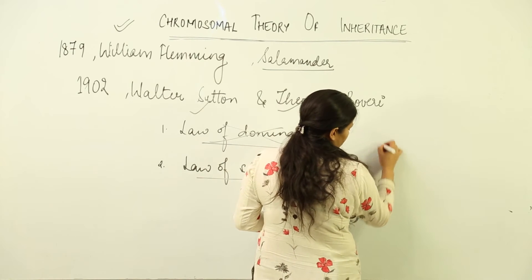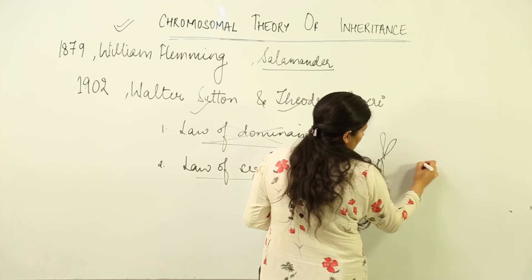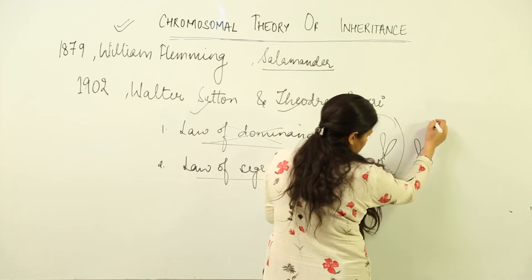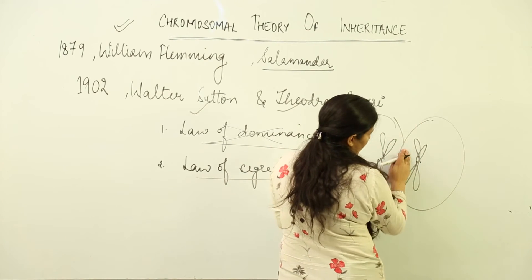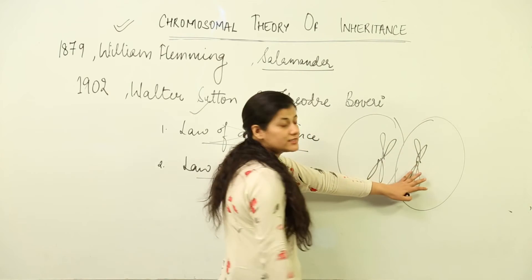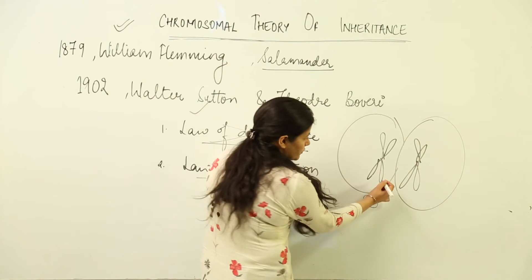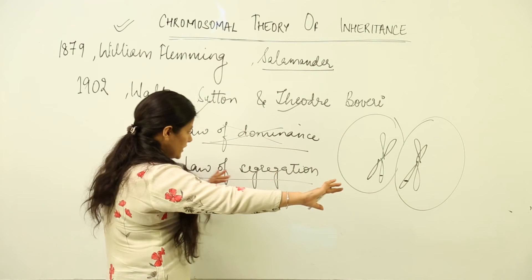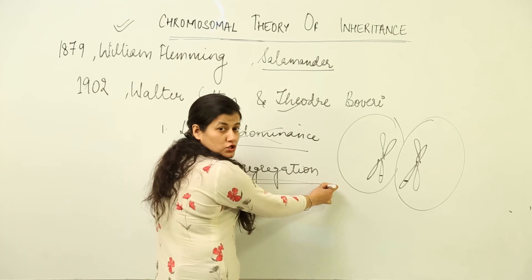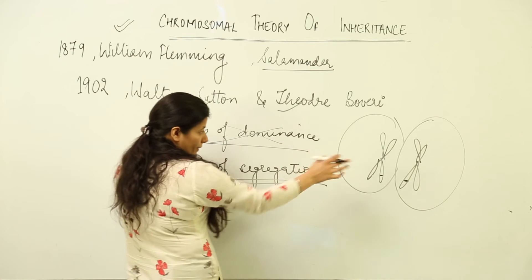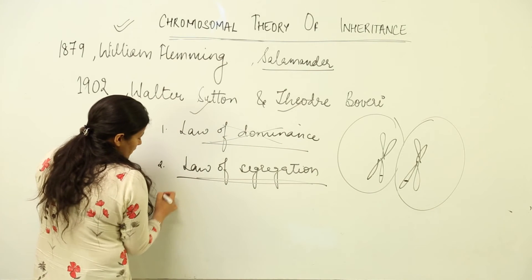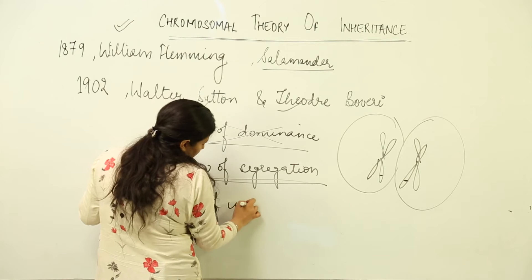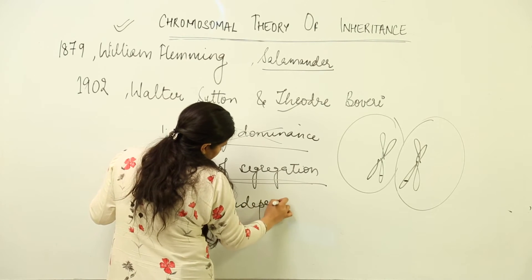In meiosis, the homologous pair of chromosomes get separated — one daughter cell gets one of the pair and the other gets the other. So if an allele is located on one chromosome, it gets segregated. This corresponds to the law of segregation. Apart from this, we also see the law of independent assortment.